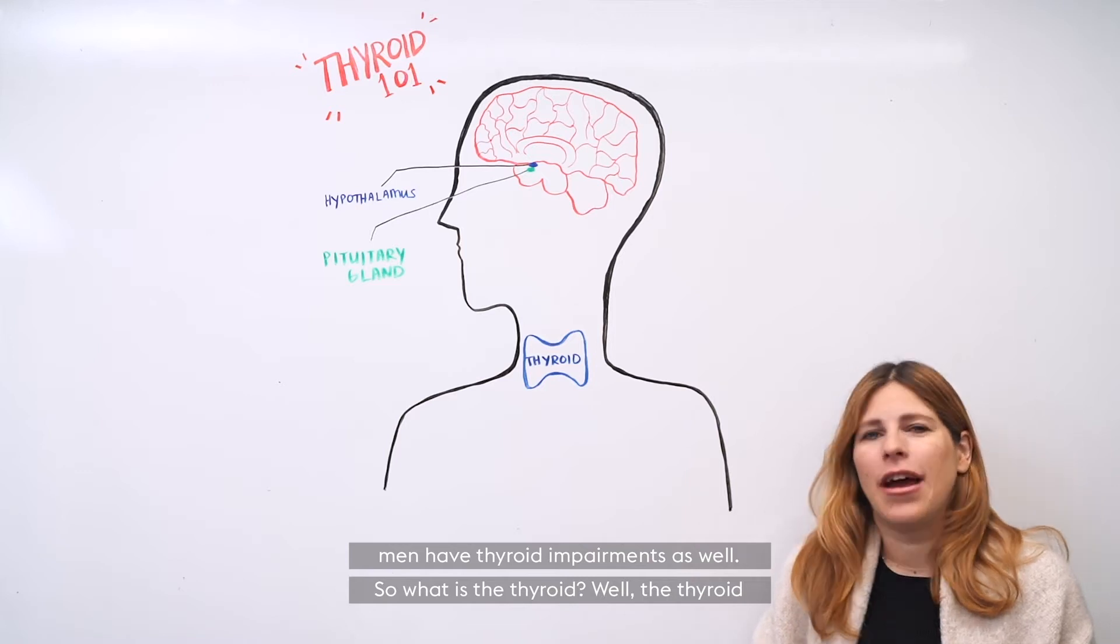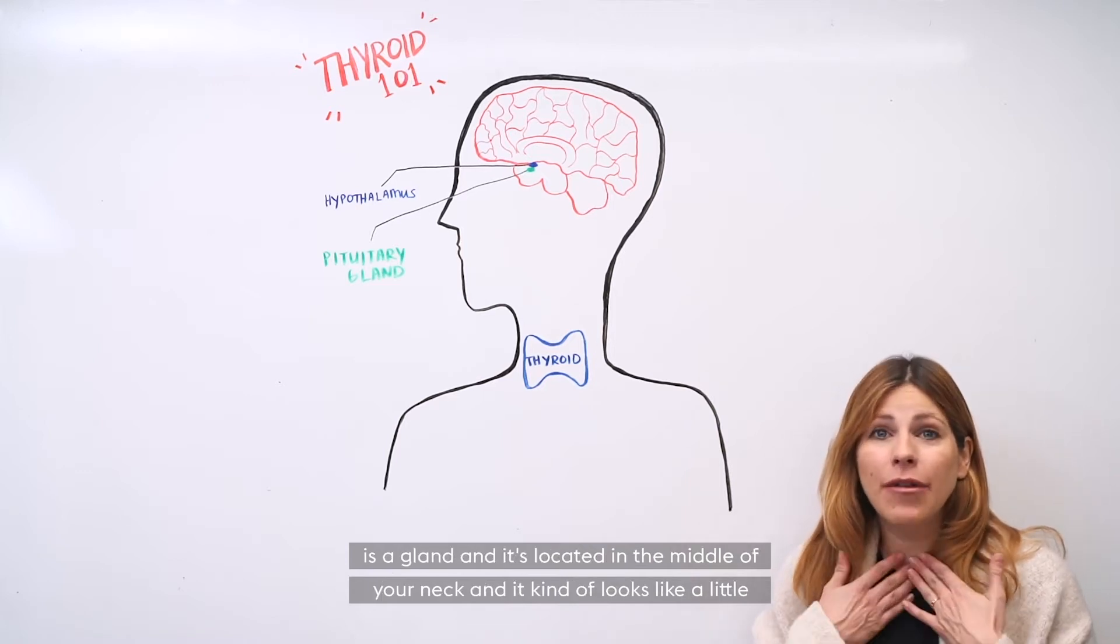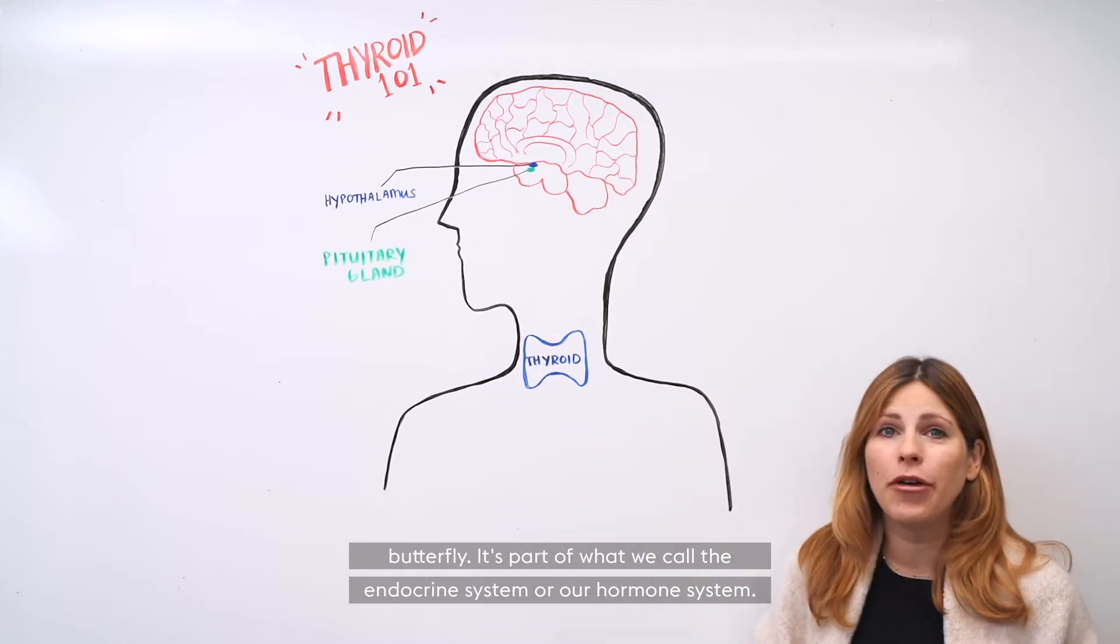So what is the thyroid? Well, the thyroid is a gland and it's located in the middle of your neck and it kind of looks like a little butterfly.